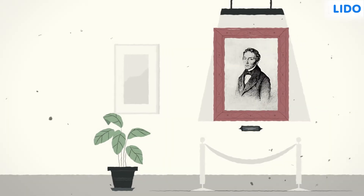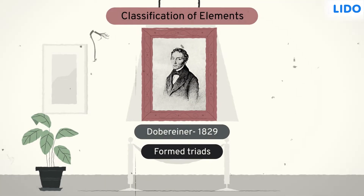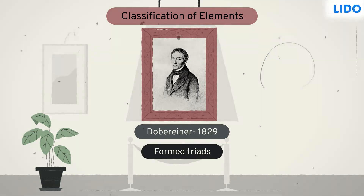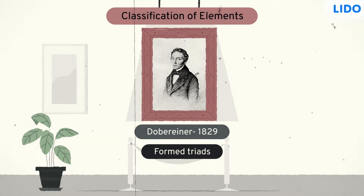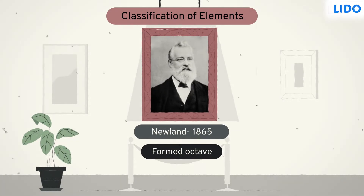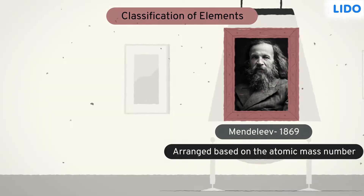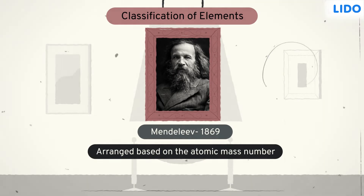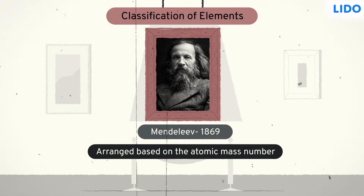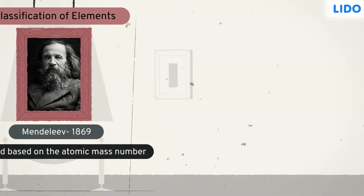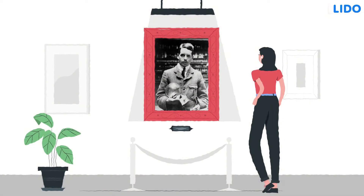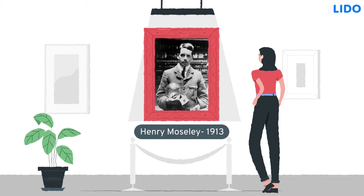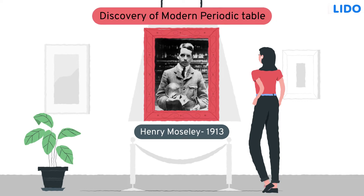Many scientists were working on finding the periodicity of elements and gave different bases for arranging and classifying the elements. But all failed and could not properly classify the newly discovered elements in the periodic table. But in the year 1913, an English physicist, Henry Moseley, contributed significantly towards developing the modern periodic table.